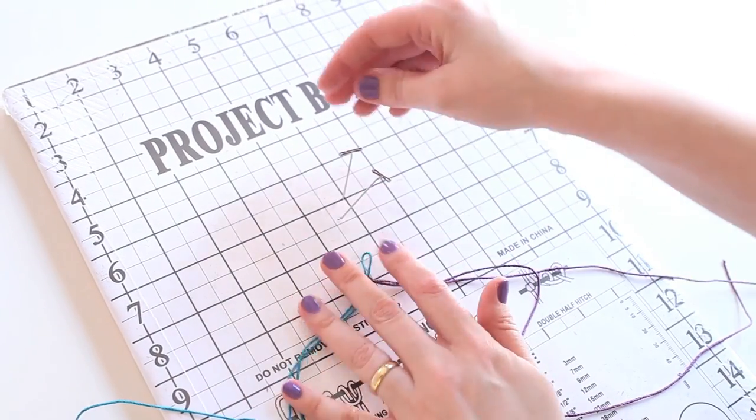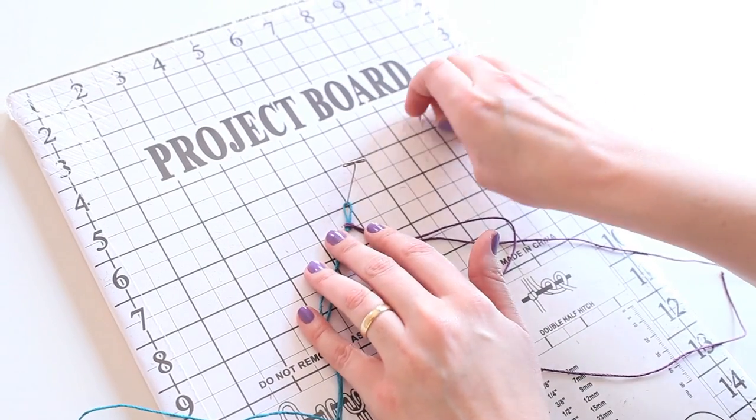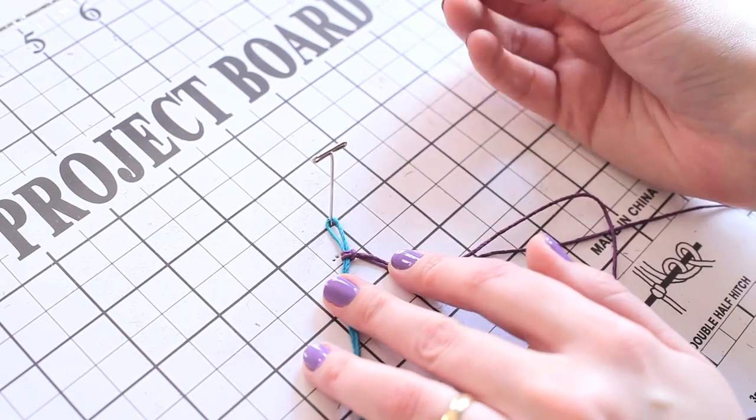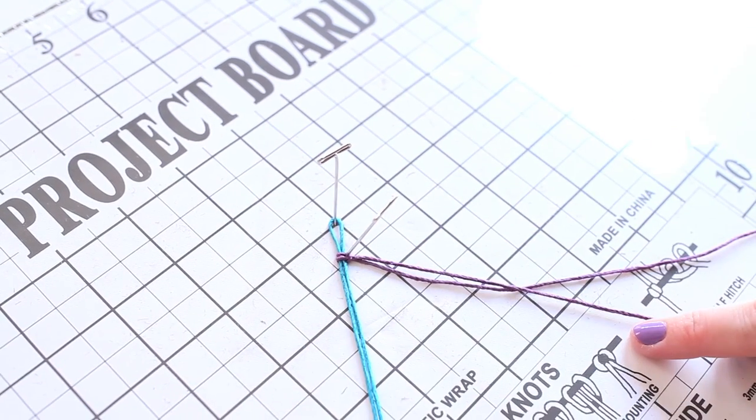Now I'm going to use this handy project board to keep my work in place. I've got this loop pinned through the top and I'm going to pin this knot by piercing it with a pin and locking it in place.